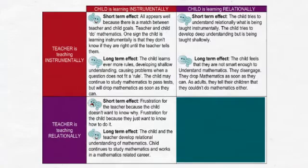Now let's imagine the saddest case of all: the teacher is teaching instrumentally, but the child wants to learn relationally. The short-term effect is that the child tries to understand relationally but is being taught instrumentally. The child is trying to develop deep understanding of concepts and relationships between concepts, but they are being taught in a shallow way. The long-term effect is that the child feels they are not smart enough to understand mathematics. They disengage.